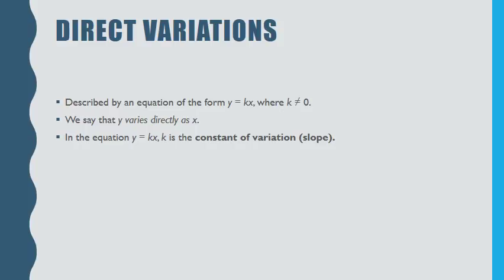So direct variations are described by the equation y equals kx. We say that y varies directly as x. And in the equation y equals kx, k is our constant of variation which just is another fancy word for slope.